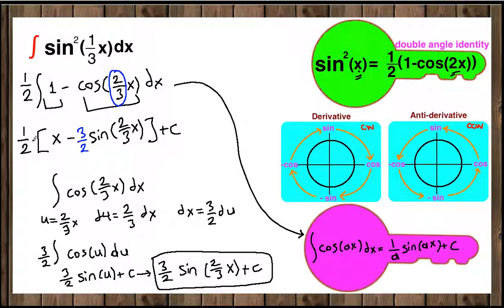Now we're going to distribute 1/2 inside the parenthesis. So 1/2 times x is 1/2 x, and 1/2 times 3/2 is 3/4 sin(2/3 x) plus C. This is our final answer.